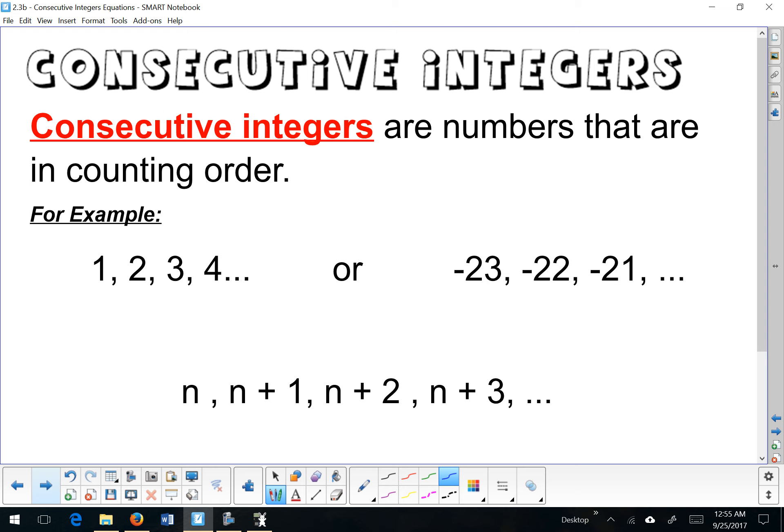At the top of your notes, it says that consecutive integers are numbers that are in counting order. Here are a few examples: 1, 2, 3, 4, or even negative 23, negative 22, negative 21, and so on.